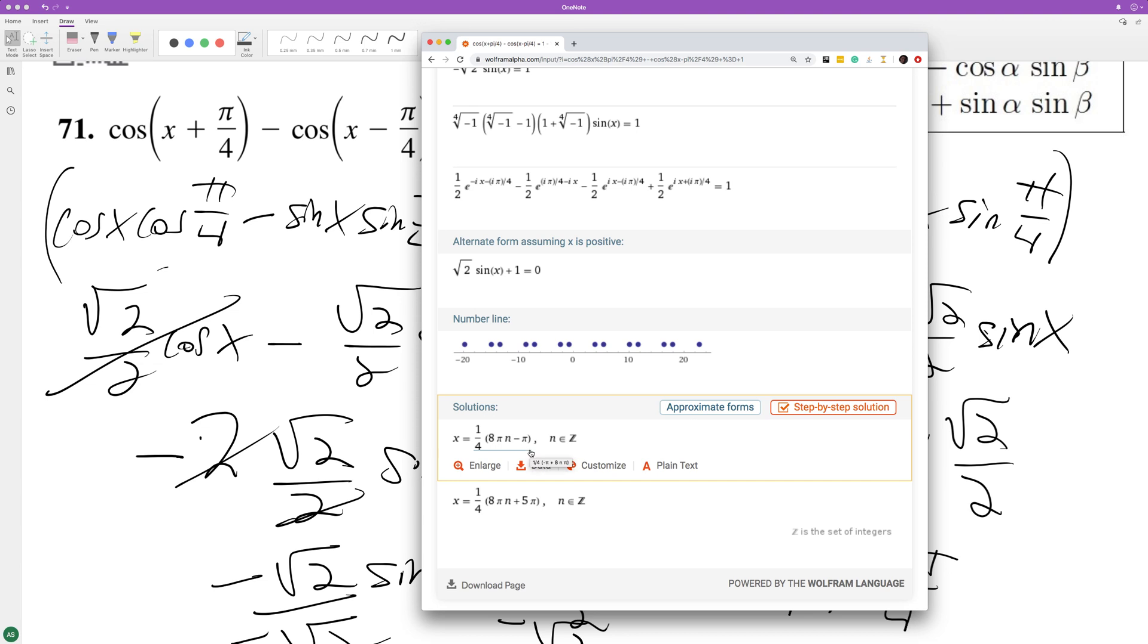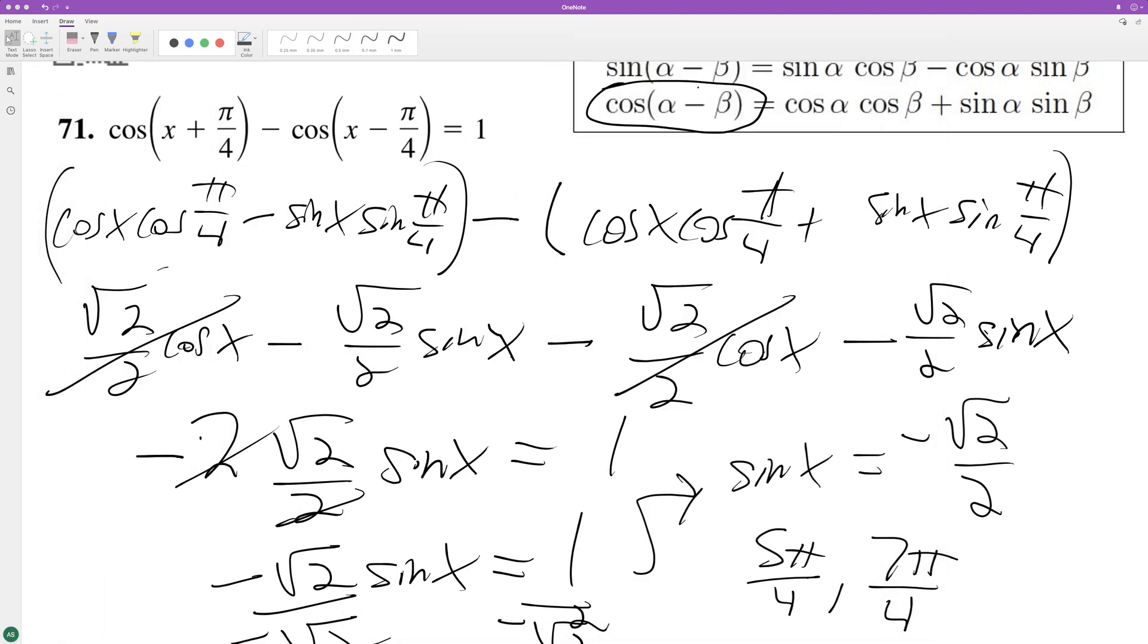So ignore that 8 pi. So if you subtract from 2 pi, pi over 4, you get 7 pi over 4. And then over here you'll get 5 pi over 4. So 7 pi over 4 and 5 pi over 4. So that is correct. Cool. I'm so happy I got it right.